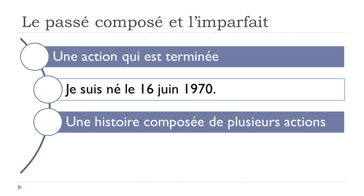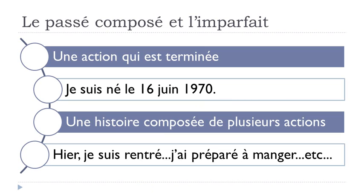Une histoire composée de plusieurs actions — a story made up of several actions. If you've got several actions in a story, normally you should use le passé composé. For instance: 'Hier, je suis rentré, j'ai préparé à manger,' etc. So orally, when you explain to a friend what you did yesterday and you introduce these actions, that's the tense you will use — le passé composé.